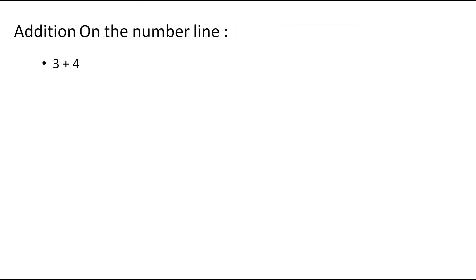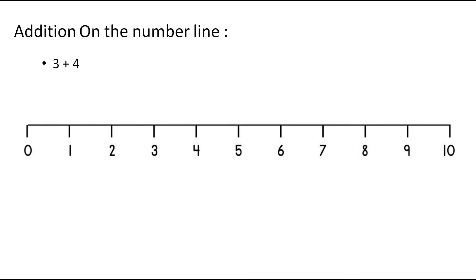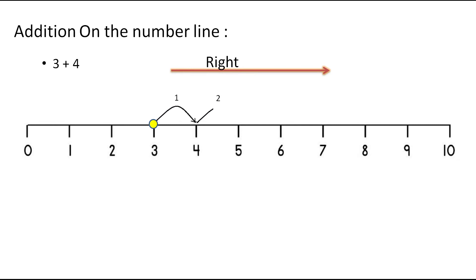First of all, we will understand addition on the number line. Here the given example is 3 plus 4 and this is the number line. Whenever we add the numbers by using number line, we have to point out on the first number given in the question. Here it is 3, so we are going to point out on 3. And as the number to be added is 4, we have to move 4 steps to the right from the number pointed 3. The first move will be on 4, the next move is on 5, the third move is on 6 and the fourth move is on 7.